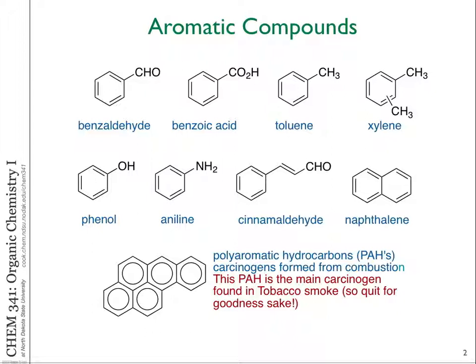When we talk about toluene, that's a benzene ring with a CH3 — that word encompasses all of that and we use toluene as a parent name. Xylenes have two CH3 groups on the benzene. We can have rings fused together like in naphthalene — you know, mothballs? That's pure naphthalene. They can be larger aromatic compounds — polyaromatic hydrocarbons where all the rings are pieced together.